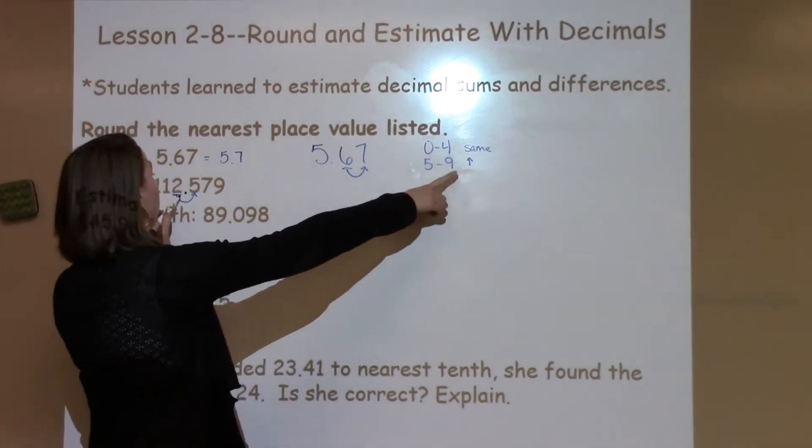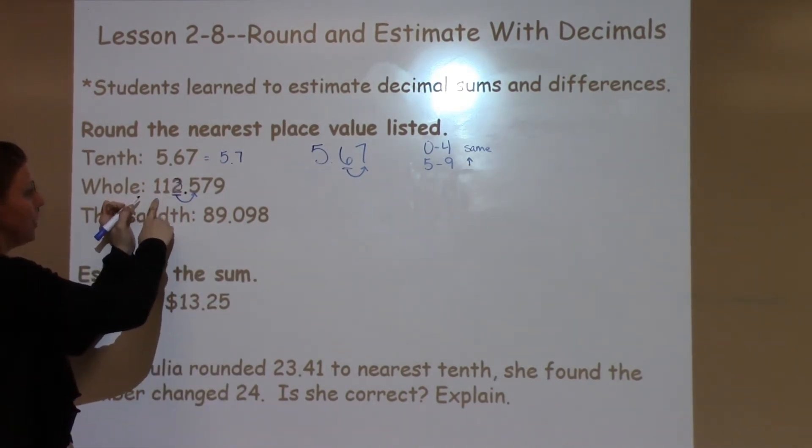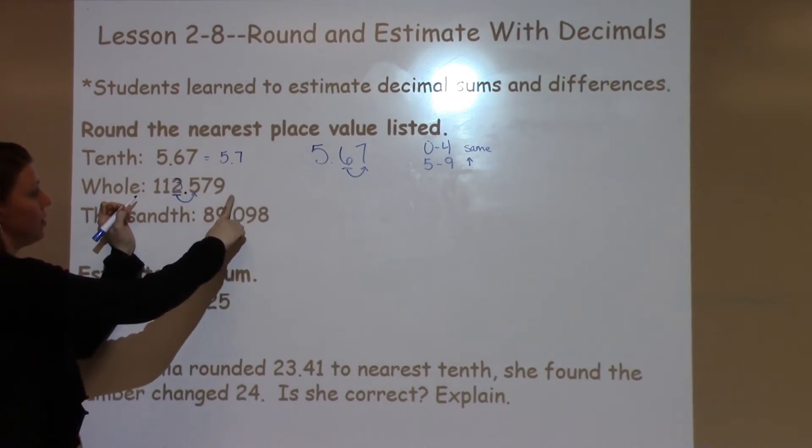So that's going to make my 2 into a 3. Everything in front of the underlined digits stays the same. Everything behind it is going to become zeros.